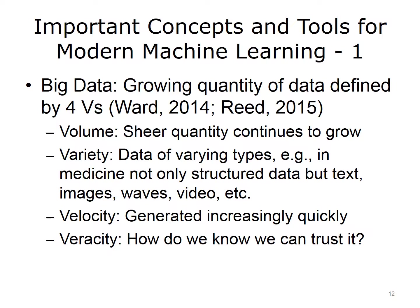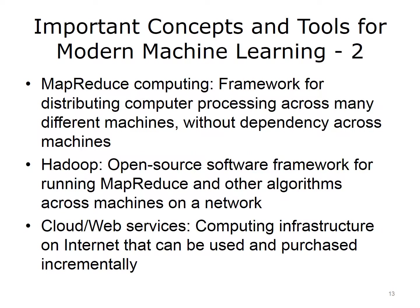There are some other important concepts and tools for modern machine learning. We often hear the term big data, referring to the growing quantity of data that's available, though it's not just about the amount. Big data is defined by the four Vs: volume, meaning the sheer quantity continues to grow; variety, meaning we have many varying types of data, including not only structured data such as lab tests and prescriptions, but also text, images, waves, video, and more; velocity, in that it's generated continuously and comes at us quickly; and finally veracity, as we have to know that we can trust the data source.